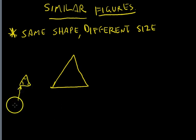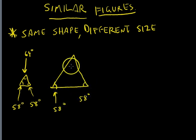If I tell you that angle's 58 degrees, and that angle is 58 degrees, and that angle is 64 degrees, and then I tell you that angle is 58 degrees, and that angle is 64 degrees, we can see that they are similar figures. They have the same angles inside, which means they're the same shape, only one's bigger than the other.